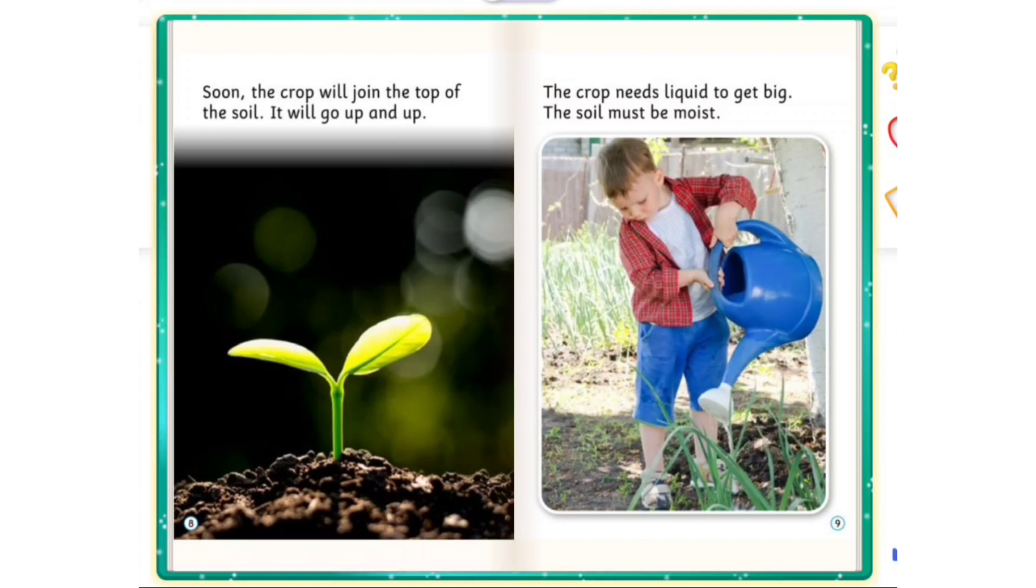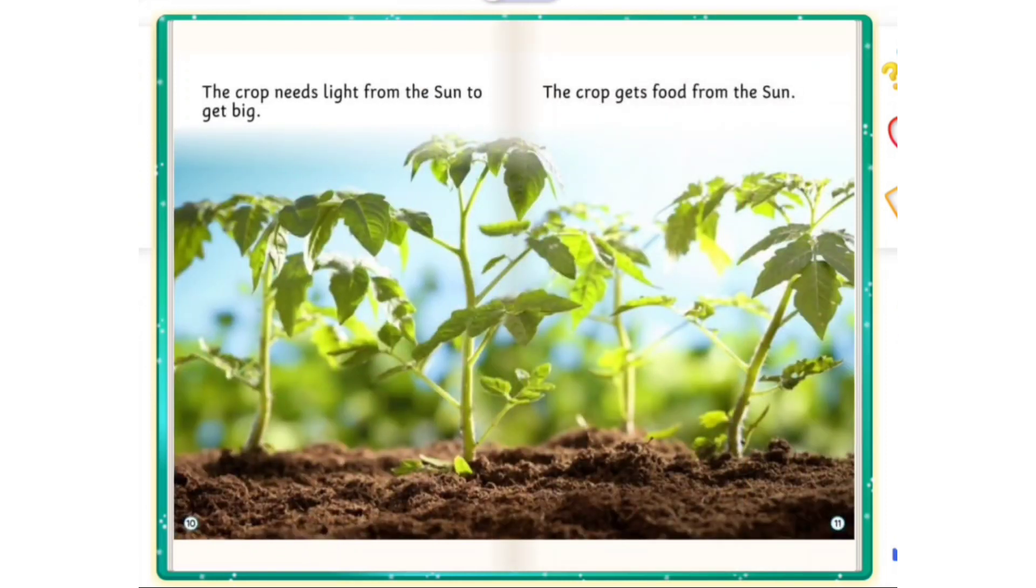The crop needs liquid to get big. The soil must be moist. The crop needs light from the sun to get big. The crop gets food from the sun.